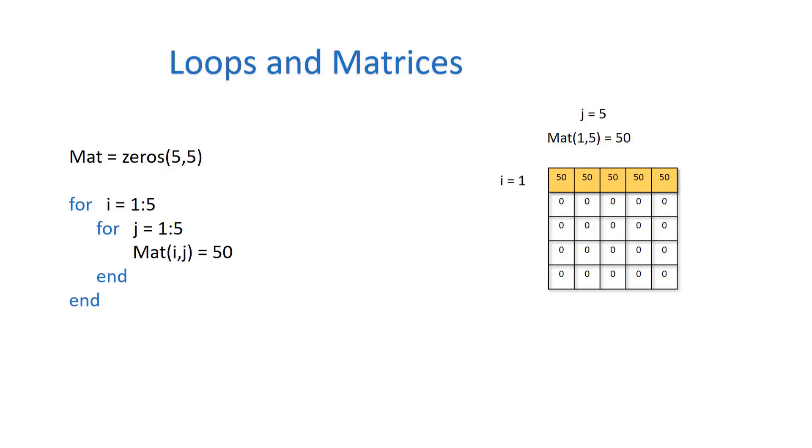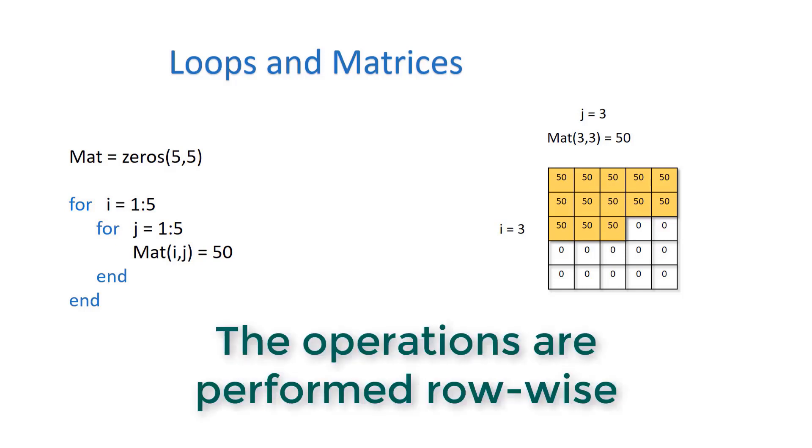Then it switches back to the first for loop with i equals 2, which is the next value in line, and it goes on and on. This is the result when we are halfway through. If you observe, these operations are being performed row-wise.